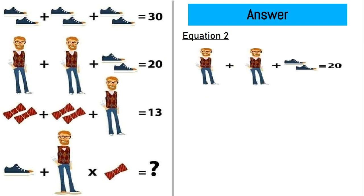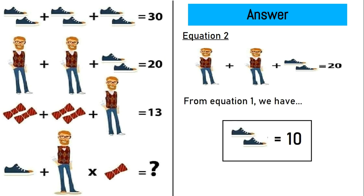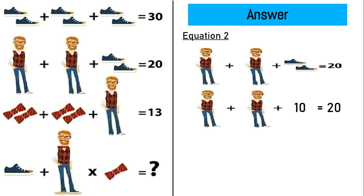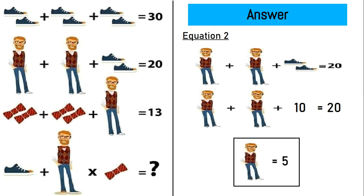Let's move on to equation number 2, which says a man plus a man plus a pair of shoes is equal to 20. From equation number 1 we have a pair of shoes is equal to 10. Putting that in equation number 2, we have a man plus a man plus 10 is equal to 20. 5 plus 5 plus 10 is equal to 20, so a man is equal to 5.